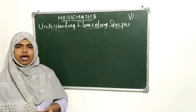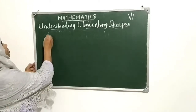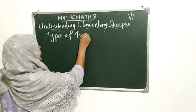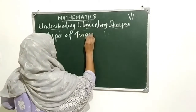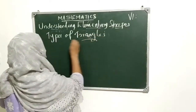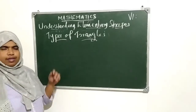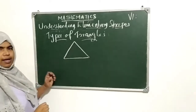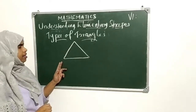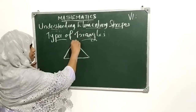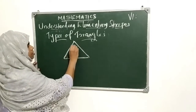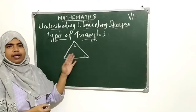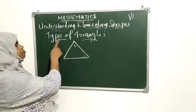Let us study the types of triangles. We know this is a triangle. It has three sides and three angles — this is called a triangle.